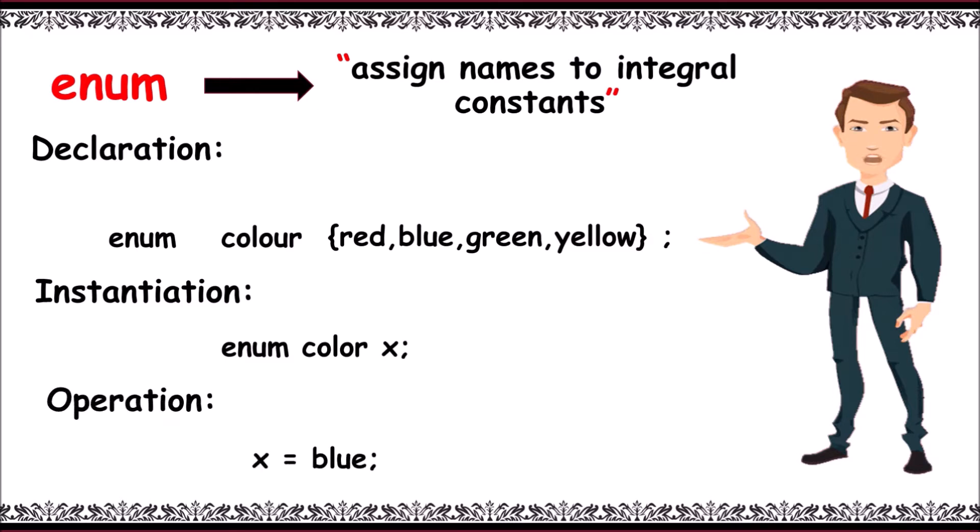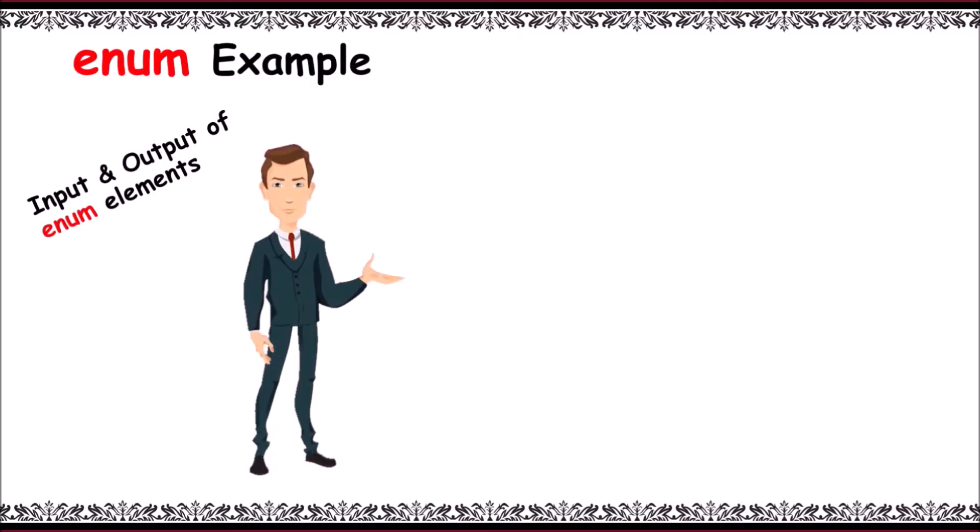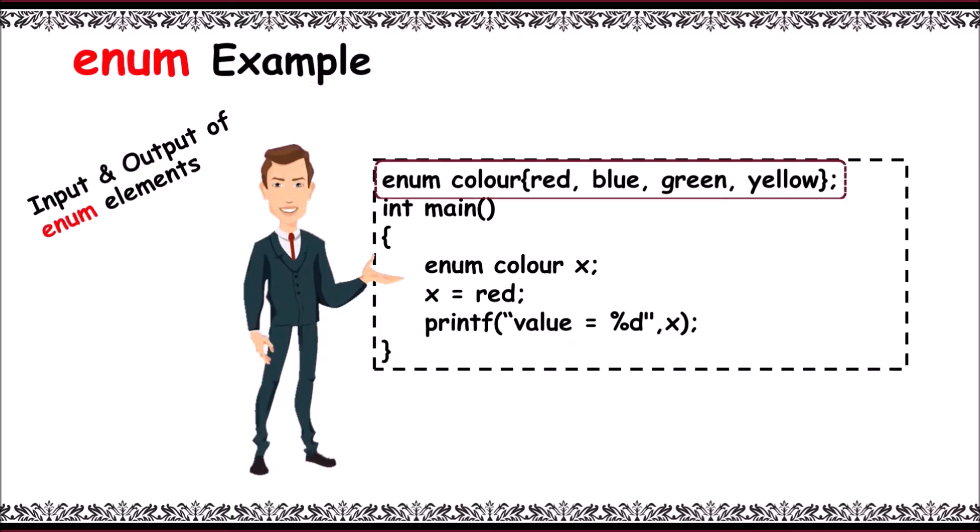Enum example: declare outside main, enum color in braces red, blue, green, yellow, and then main, and then enum color x. Color as data type and x as variable. Here now assign red to x, then print value of it.